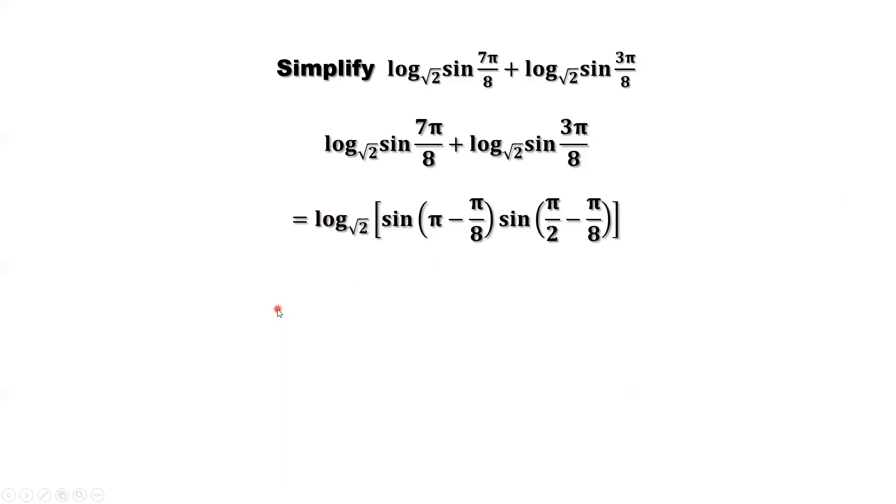Continue to simplify. What kind of formula can we use? What is this part? You can find the reference angle. Reference angle, that's π over 8 in the first quadrant. So this angle actually in the second quadrant, sine in the second quadrant is still positive. So here first part, we can drop π, use the reference angle, π over 8. So sine π minus π over 8 equals sine π over 8.